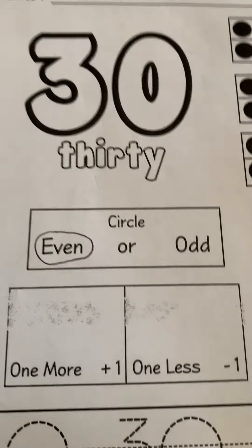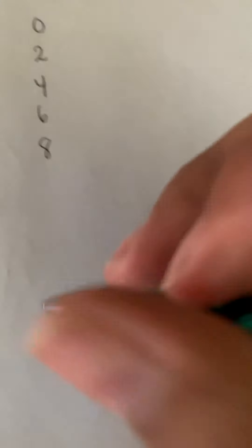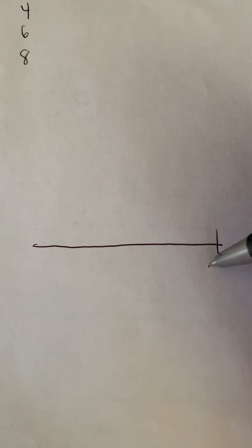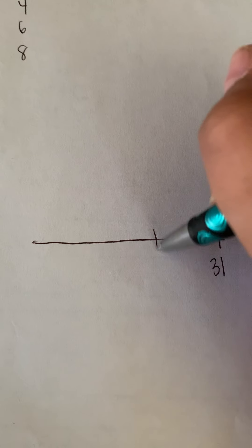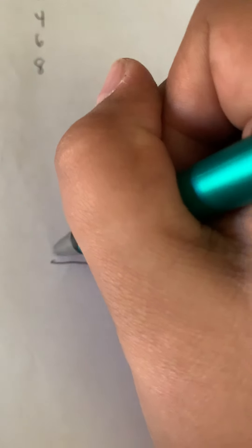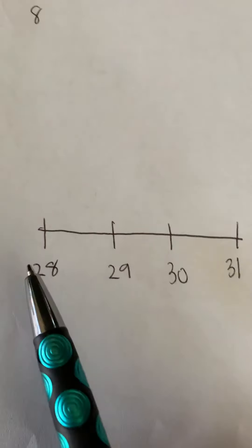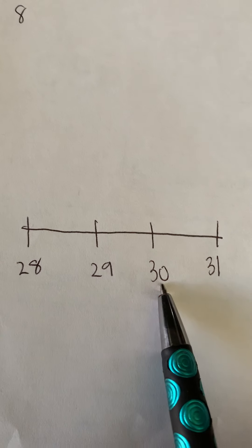Then we'll move on to our one more and one less. So I'm going to go back to the back of my sheet. And I am going to draw a number line. I'm going to end at 31, 30, 29, and we'll start with 28. So there's my mini number line. I'm only using four numbers. I have 28, 29, 30, and 31.